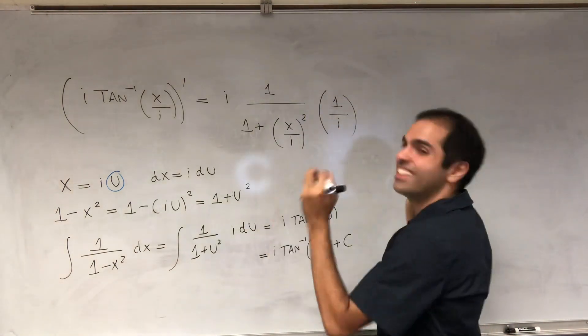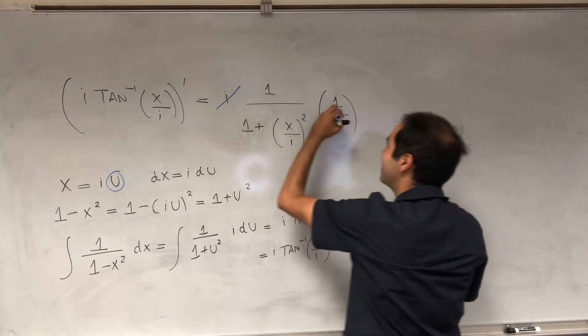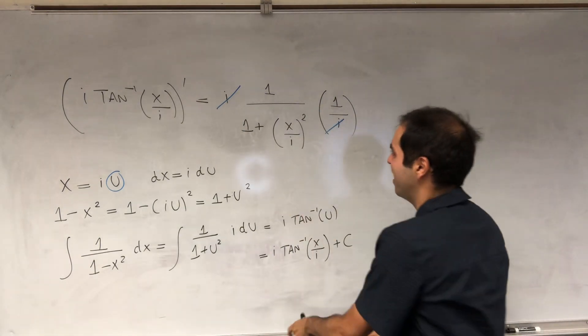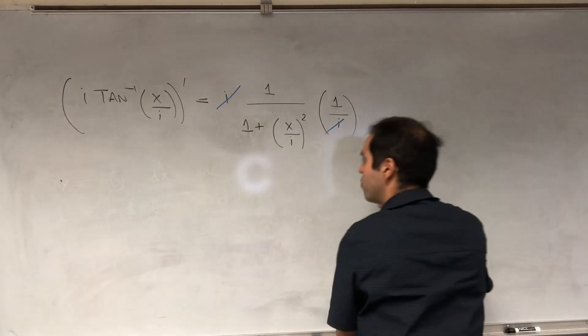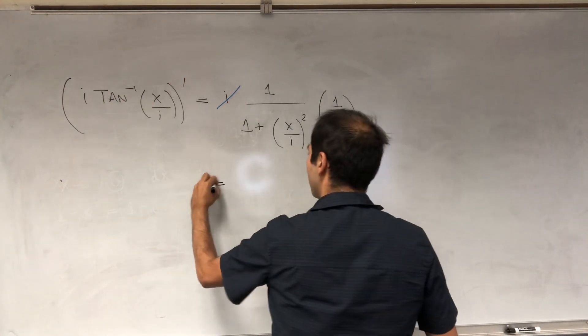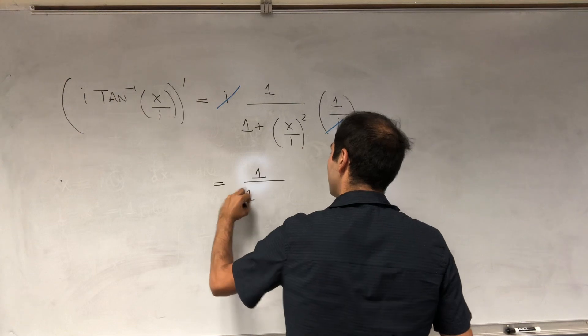And oh my, the i's cancel out. And then we get x squared over i squared, which is just the same thing as minus x squared. So 1 over 1 minus x squared.